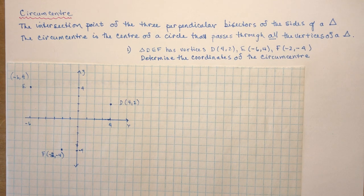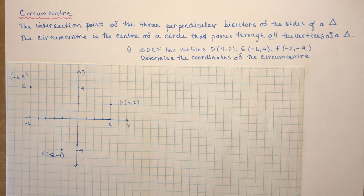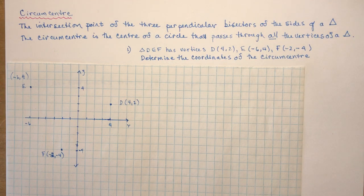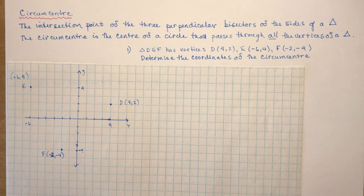In this lesson I'm going to show you how to find the circumcenter, which is the intersection point of the three perpendicular bisectors of the sides of a triangle. The circumcenter is the center of a circle that passes through all the vertices of a triangle — useful when you're trying to find something equidistant from each of the three vertices.